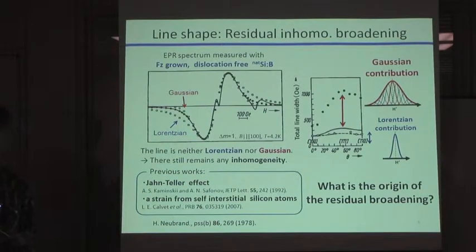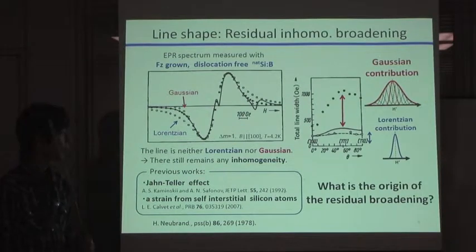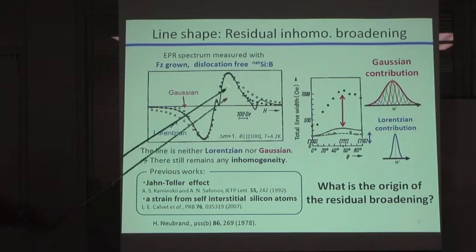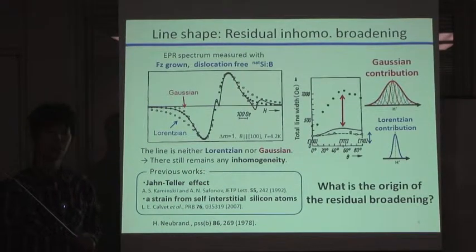Moreover, he also reported that even if we change the point-defect concentration, the magnitude of this Gaussian contribution does not change. So, this result indicates that there still remains any inhomogeneity in very pure natural silicon sample. To clarify the source of inhomogeneity, several previous work were performed. However, still now, no one can explain this origin still now. So, what is the actual origin of the residual broadening?